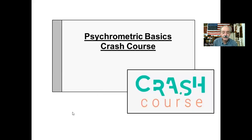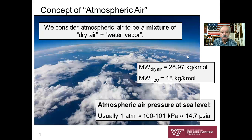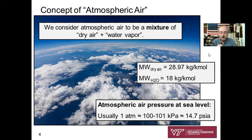Here's our crash course. Recognize this is not intended to be a full lecture on analyzing mixtures of dry air and water vapor — it is more of a review of the basics. Atmospheric air in mechanical engineering is considered to be a mixture of dry air — nitrogen, oxygen, and some other ideal gases — with water vapor.